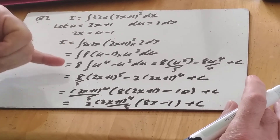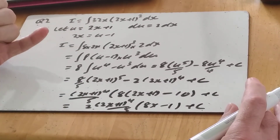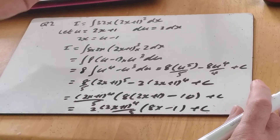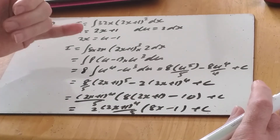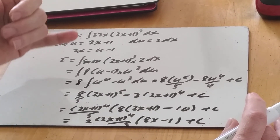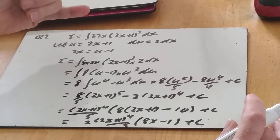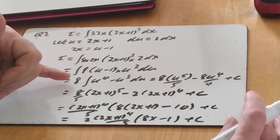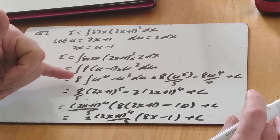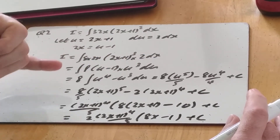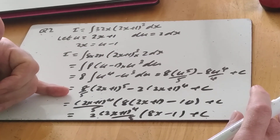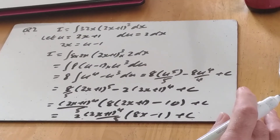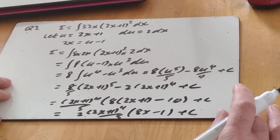So that's substitution: when something can't be integrated directly, do the substitution to reduce it to something we've done before — Year 12 integration. Integrate it, then substitute back so the answer is in terms of x and tidy up. That's how we do integration by substitution.